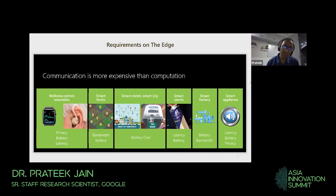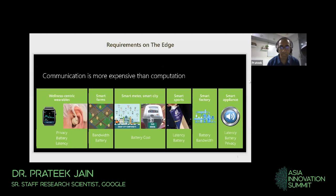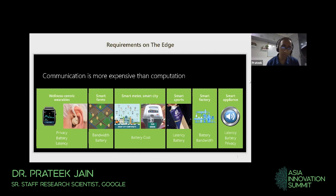One critical application area is in the domain of wellness-centric wearables, where due to privacy constraints you don't want to send data to cloud. These wearables tend to have very small devices that are battery operated, and battery and latency are key constraints. There are various other similar domains like smart meters, smart cities, and smart appliances — for example, controlling appliances through voice or vision-centric signals — where latency, battery, and privacy can be very critical aspects. That's why doing ML inference computation locally on the device is really critical.